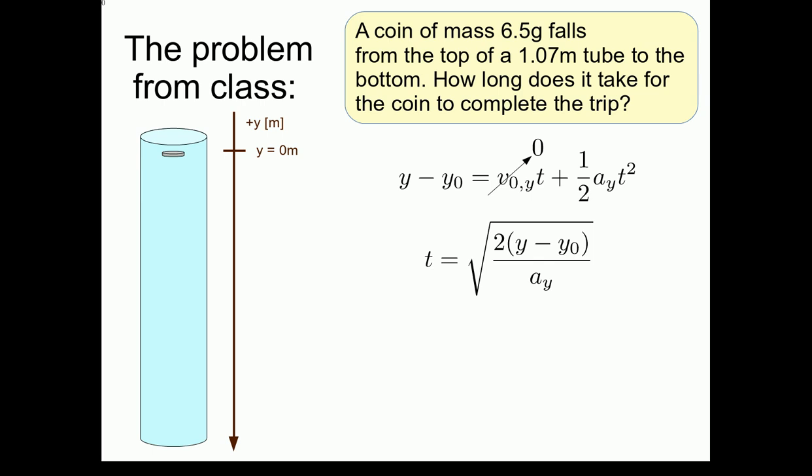I've also chosen the origin of my coordinate system to be the initial position of the coin. Translating this into our variables for our expression, we therefore have that in this coordinate system, the initial position of the coin, y not, is 0 meters. Your quiz for this video is to figure out what is the final position y, and what is the acceleration a sub y in this particular case.